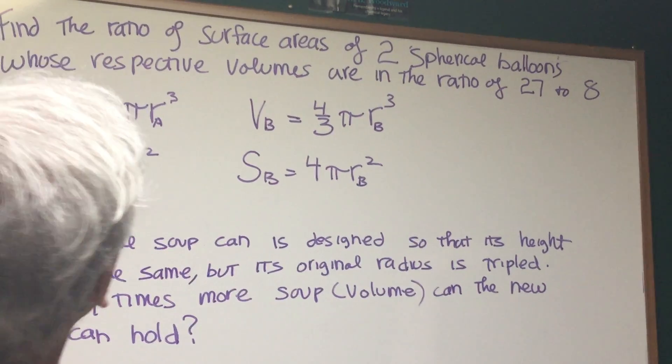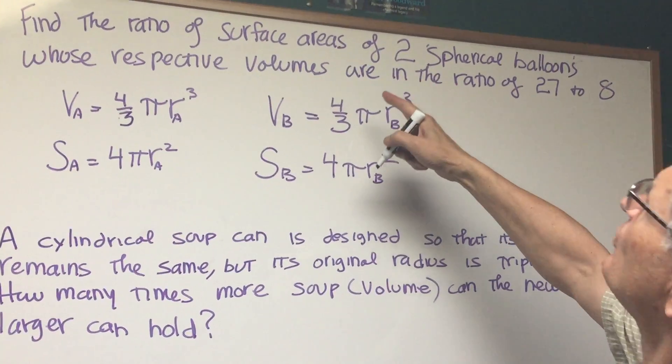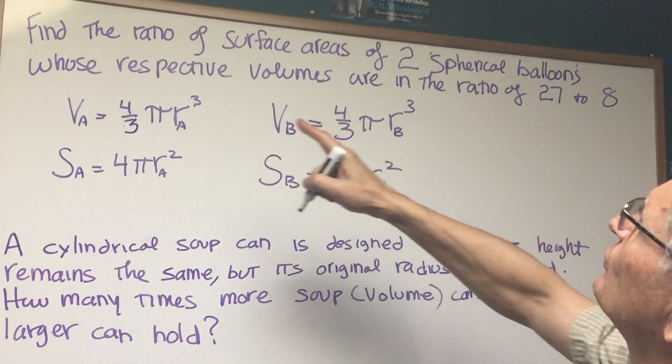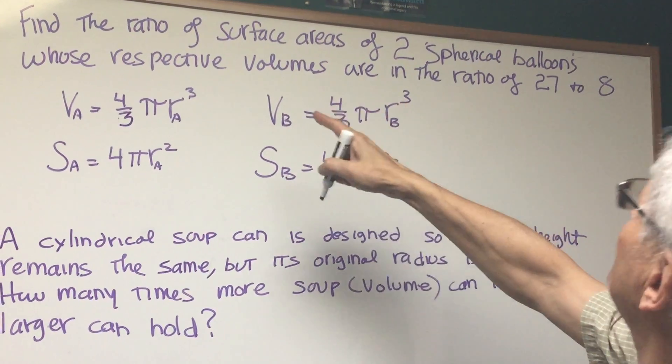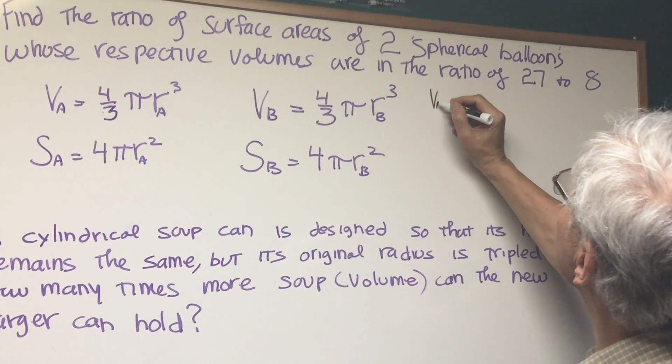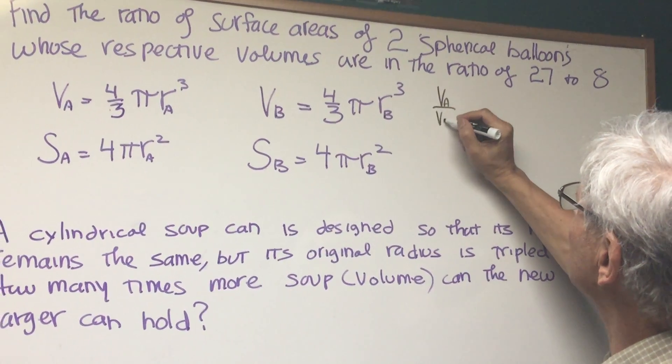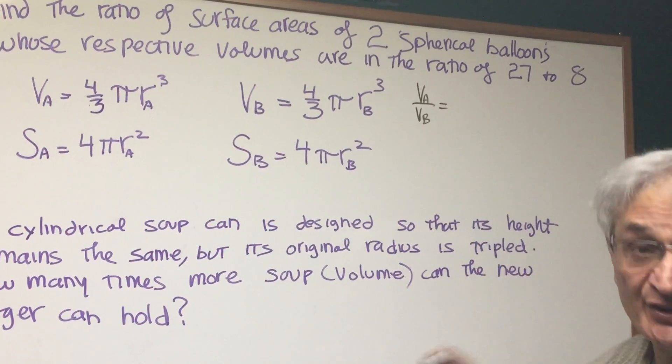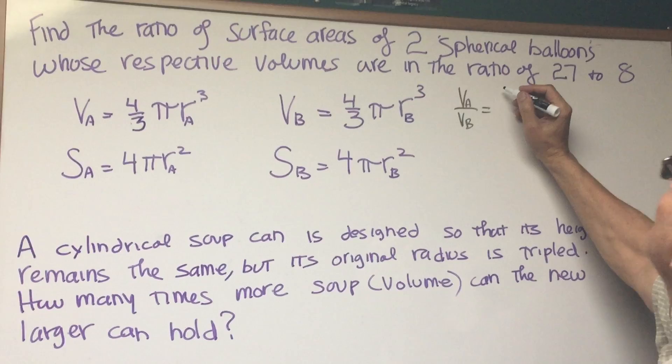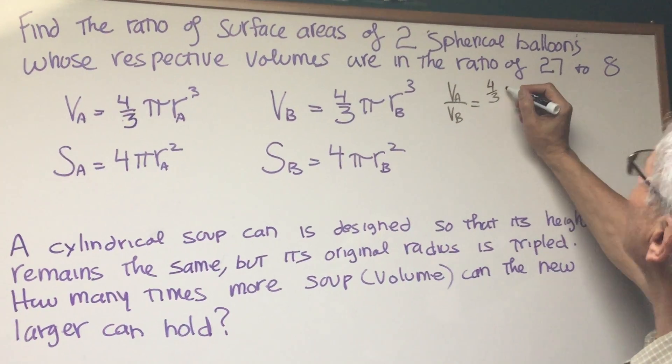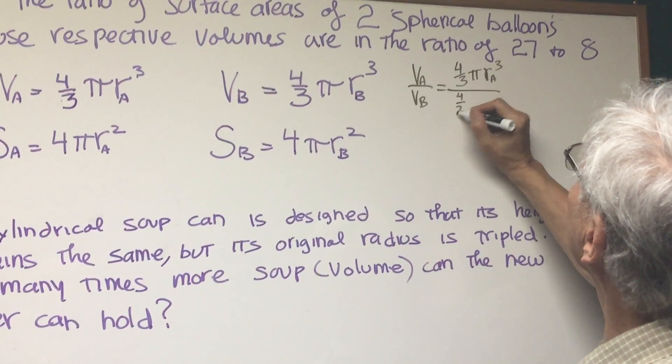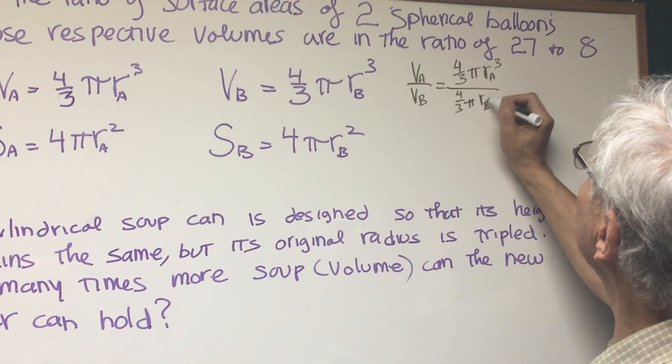Okay, so now we're talking about ratios here. So the ratio of surface areas of two spherical balloons whose respective volumes are in the ratio of 27 to 8. So let's write down the expression for the ratio of volumes of these two spheres. Volume of sphere A divided by the volume of sphere B. So what do we have? 4/3πrₐ³ over 4/3πrᵦ³.